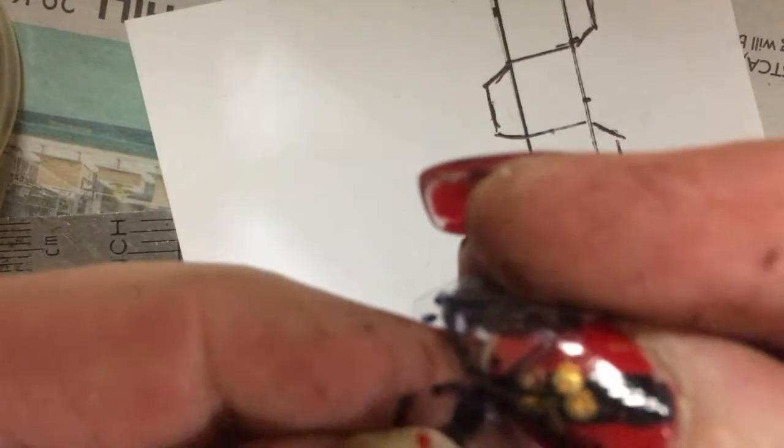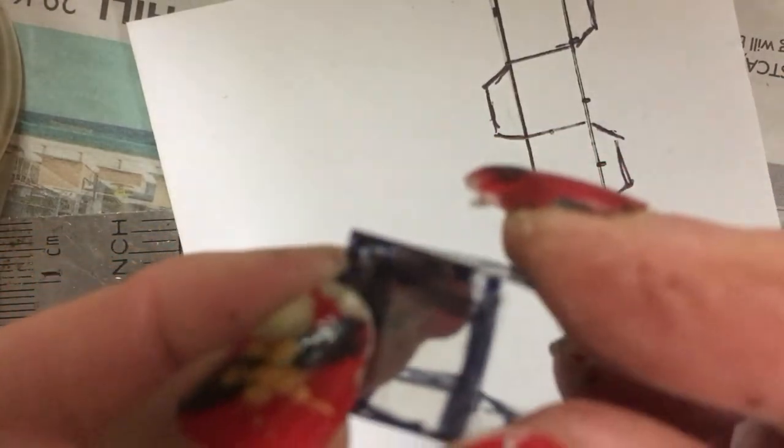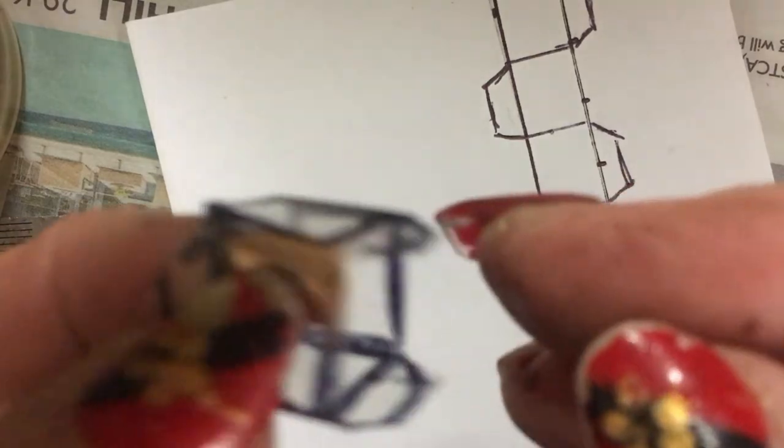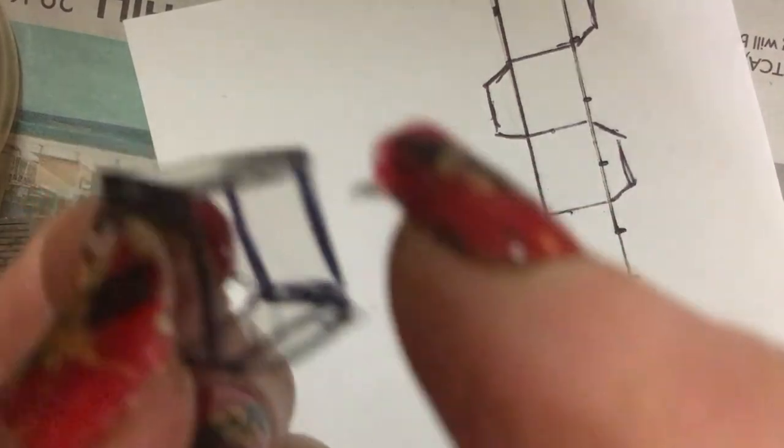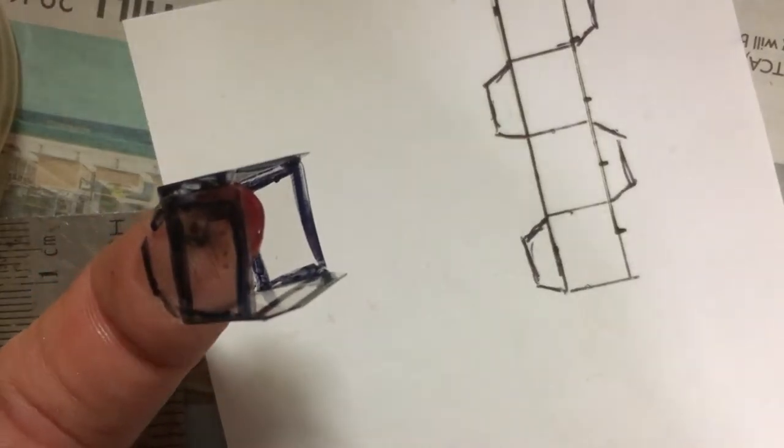Then what you're going to do is glue the tab onto the side there like that, and you're going to fold these tabs down and the ones at the top as well, so that you've got something to glue on when it comes to glue them onto the posts.